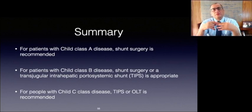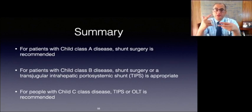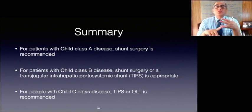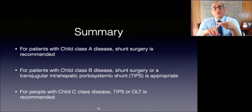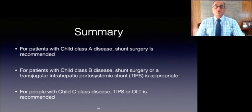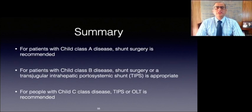For patients with Child class A disease, shunt surgery is recommended if surgery is needed. For patients with Child class B disease, shunt surgery or TIPS is appropriate. For people with Child class C disease, TIPS or OLT — orthotopic liver transplant — is recommended. To sum up, the surgical interventions include decompressions, devascularization procedures, and OLT — orthotopic liver transplant.